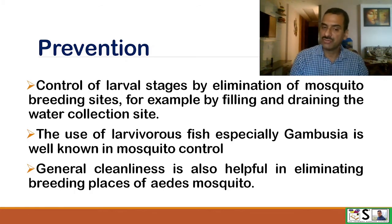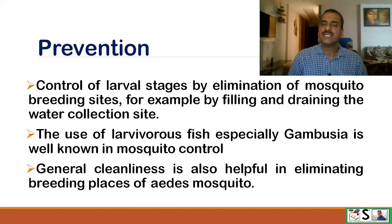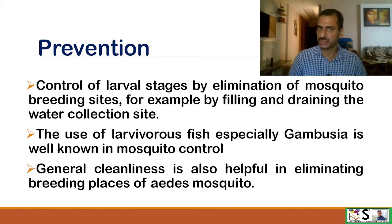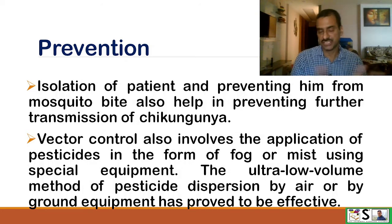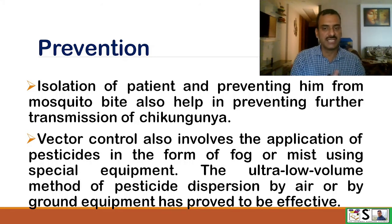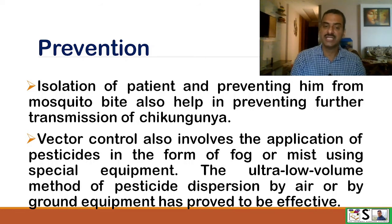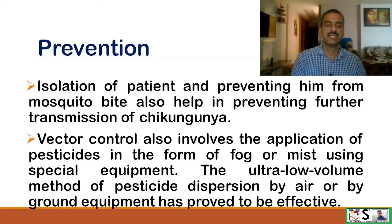The use of larvivorous fish, especially Gambusia, is a well-known mosquito control measure. General cleanliness is also helpful in eliminating the breeding places of Aedes mosquito. Isolation of the patient and preventing them from mosquito bites also helps prevent further transmission. Vector control also involves application of pesticide in the form of fogs and mist using special equipment. The ultra-low-volume method of pesticide dispersion by air or ground equipment has proved effectiveness in controlling the vector.